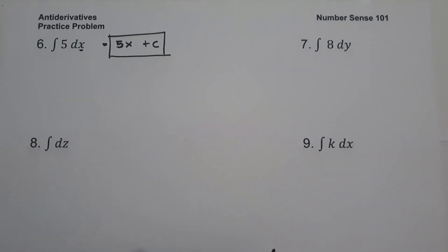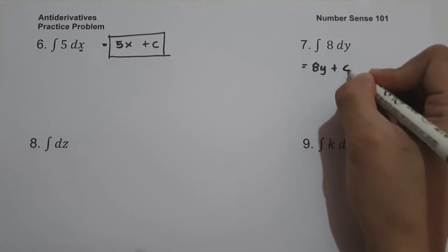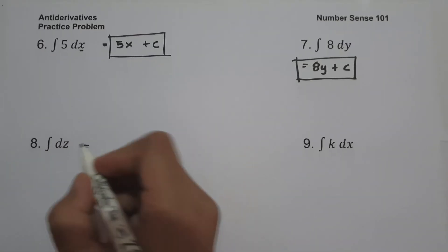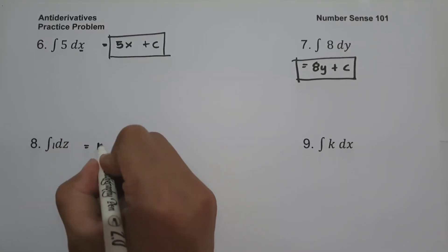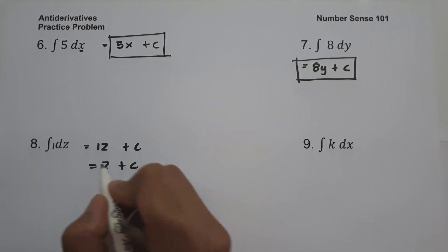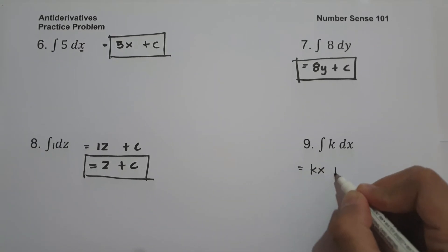On number 7, what is the antiderivative of 8 dy? This will be 8y plus c. On number 8, what is the antiderivative of dz? Since we have 1 here, this will be 1z plus c, or simply z plus c. On number 9, what is the antiderivative of k dx? So we have kx plus c.